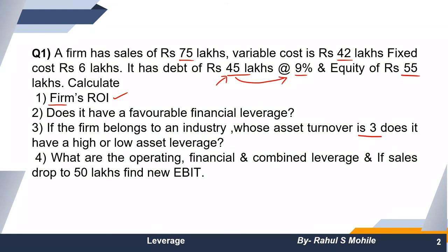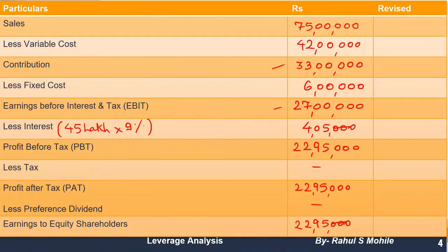The last part asks: if sales drop to 50 lakhs, find the new EBIT. We will calculate the revised figures in a column format. Sales will now be 50 lakhs. To find variable cost at 50 lakhs, we use the ratio method — variable cost was 42 lakhs when sales were 75 lakhs, meaning variable cost is 56% of sales.